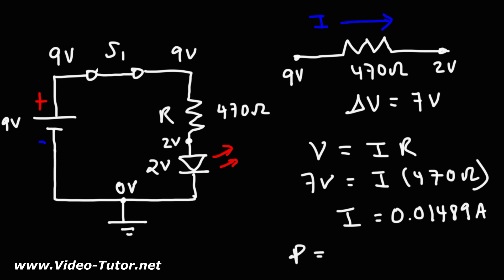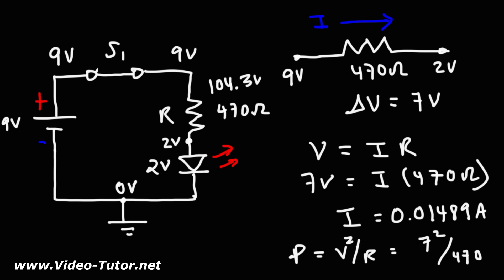To calculate the power being dissipated by the resistor, we can use the formula V²/R. The voltage across the resistor is seven volts, so that's seven squared divided by 470 ohms, which is 49 divided by 470. So this resistor is consuming approximately 0.1043 watts, or about 104.3 milliwatts.